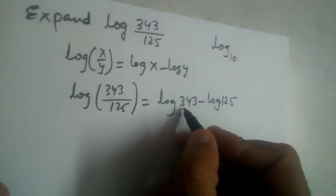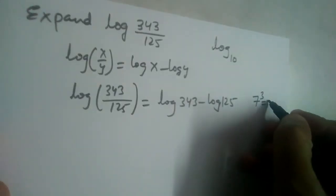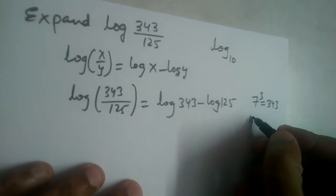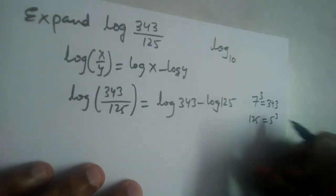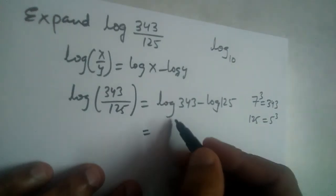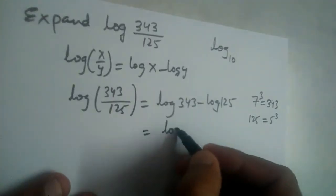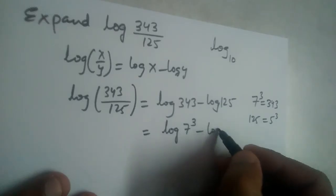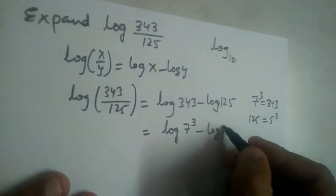Now, 343 equals 7³ and 125 equals 5³. So in place of log 343, we write log 7³, and in place of log 125, we write log 5³. This gives us log 7³ minus log 5³.